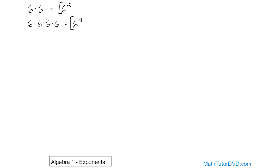Let's take a few more examples for practice. What if you had 7 times 7 times 7? How would you write that as an exponent? The number we're multiplying is 7, and we're doing it 3 times, so the exponent is to the power of 3 — 7 to the power of 3. That's the final answer.